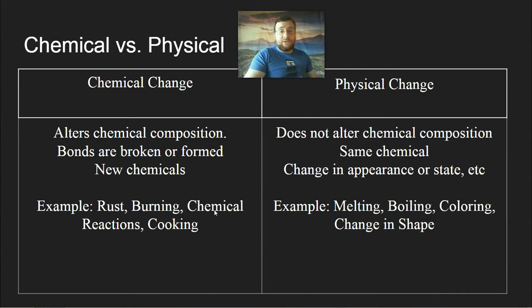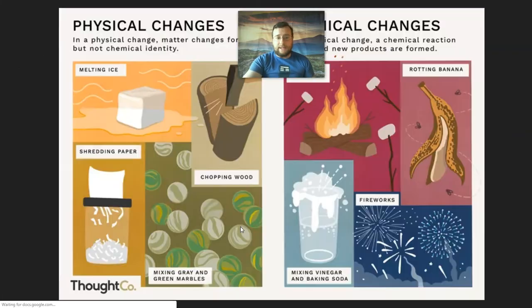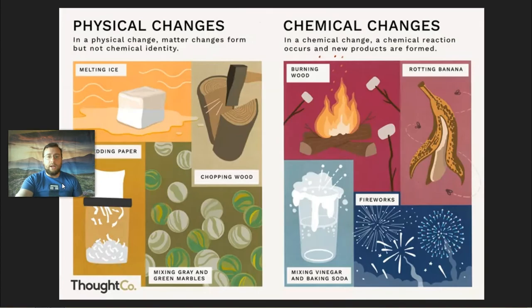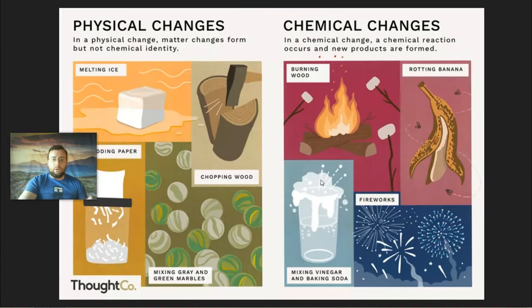Versus a physical change, which does not alter the chemical composition of matter, you have the same chemical, the same substance before and after, even if it changes appearance, like changing the state of matter, like going from melting or boiling, or changing the color or changing the shape. So things like cutting stuff up, shredding it, mixing it, all of those would be physical changes, versus things like burning, rotting, chemical reactions, explosions, those would be chemical changes.